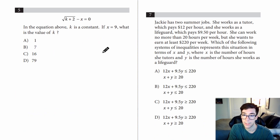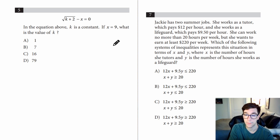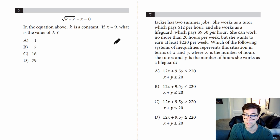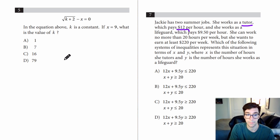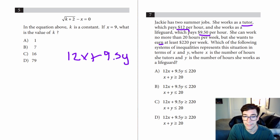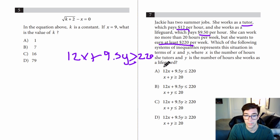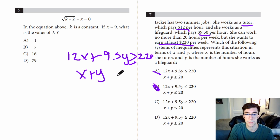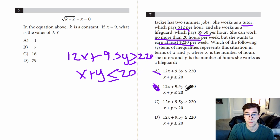Number seven: Jackie has two summer jobs. She works as a tutor, which pays $12 per hour, and as a lifeguard, which pays $9.50 an hour. She can work no more than 20 hours per week, but she wants to earn at least $220 per week. For the pay equation: 12X plus 9.5Y is greater than or equal to 220. For the hours: X plus Y is less than or equal to 20. That's going to be answer C.